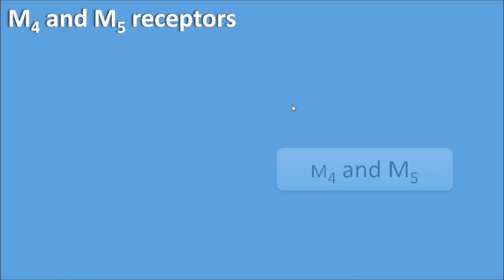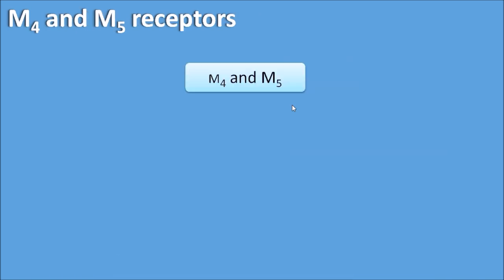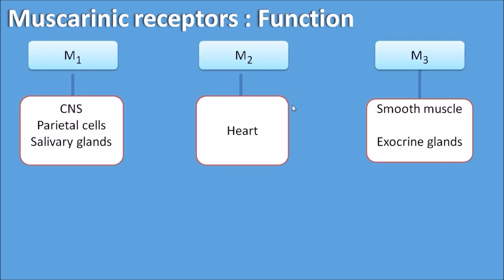M4 and M5 receptors are mainly present within the CNS and their functional role is still not clear. So we are going to focus mainly on the M1, M2, and M3 receptors.